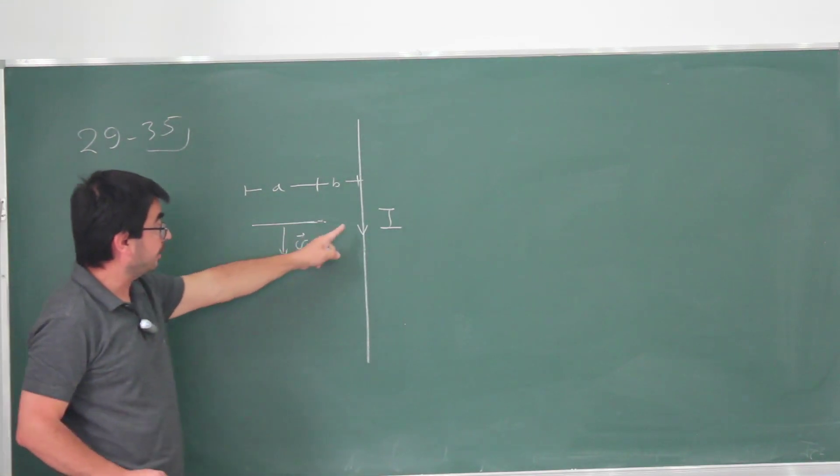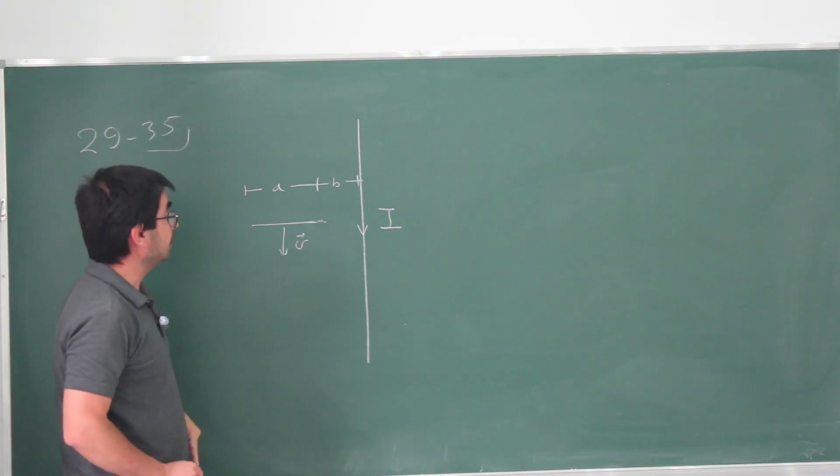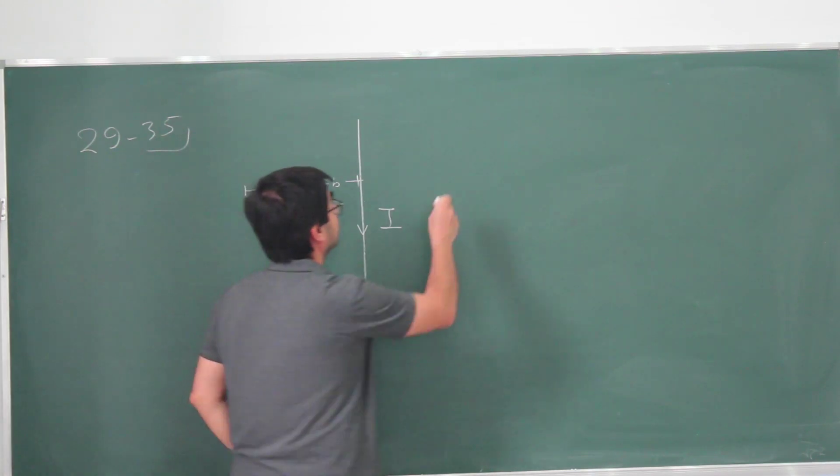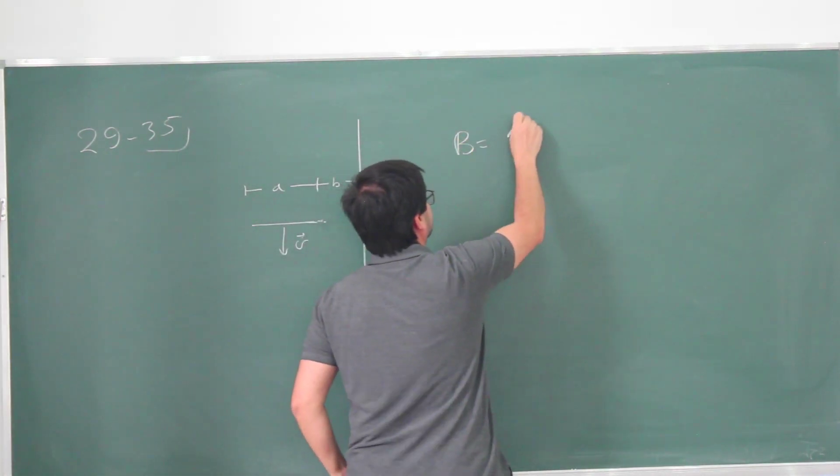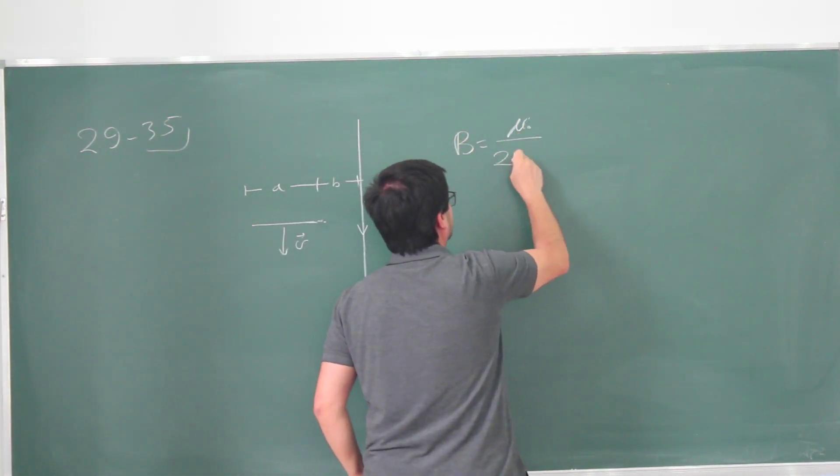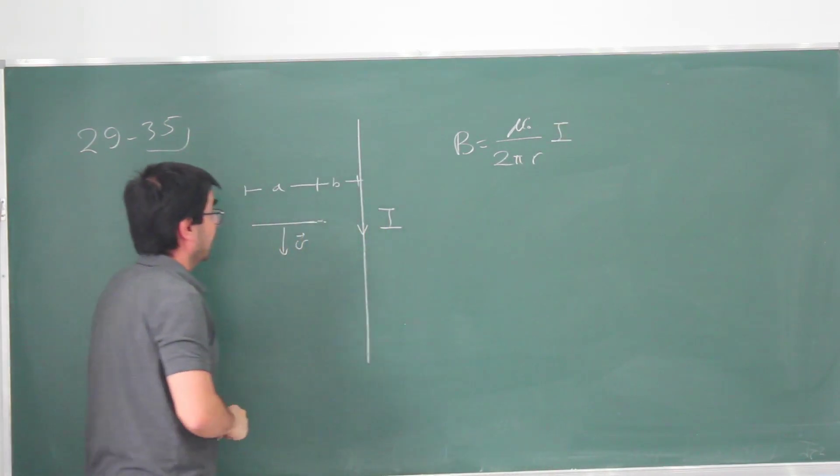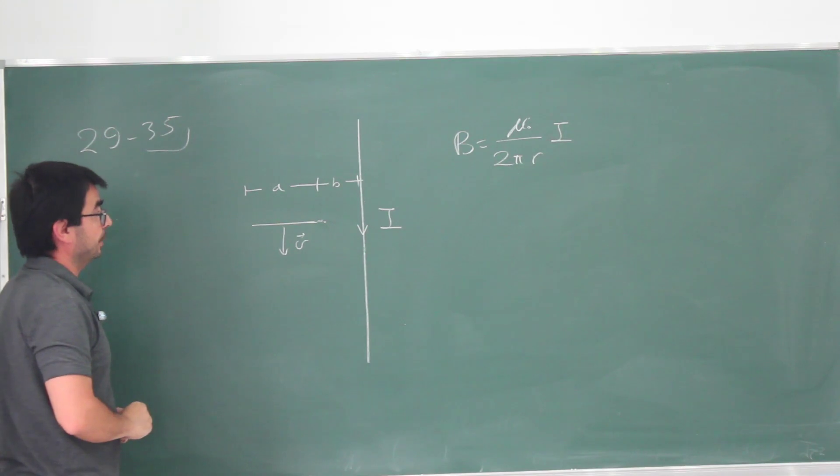If this wire is infinite, then we can calculate, we already know what its magnetic field should be. The magnetic field is going to be μ₀/(2πr) times I. And its direction, the direction of the magnetic field, is going to be given by the right-hand rule.